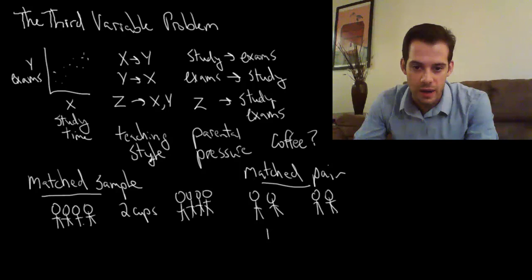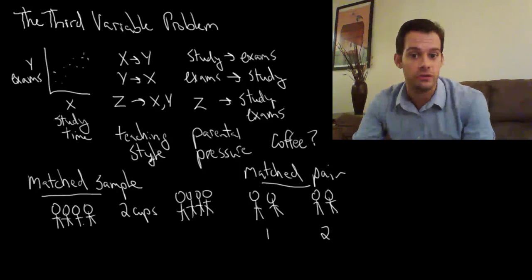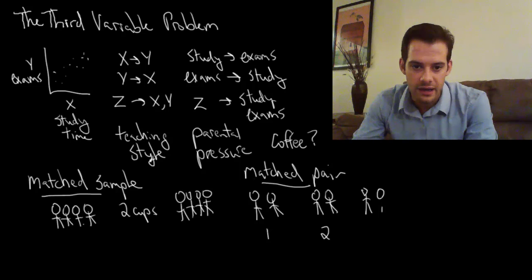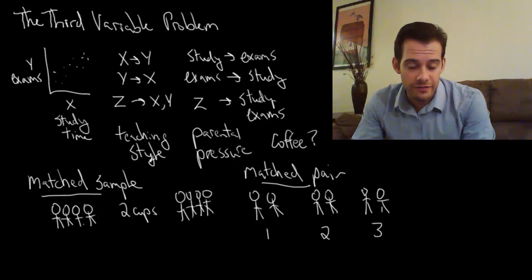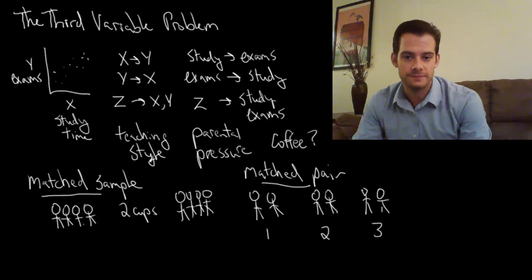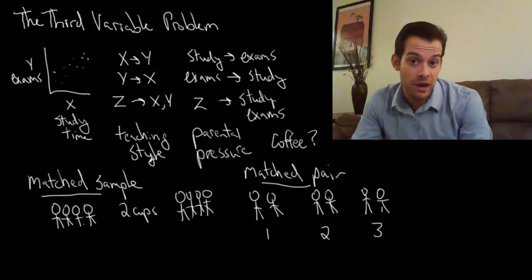Here's a student who drinks two cups, here's another student who also drinks two cups. And here's a student who drinks three cups, here's another student who drinks three cups. So each level of coffee consumption has a pair. And then what I do is I compare those pairs.